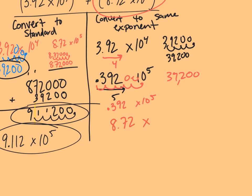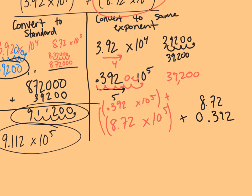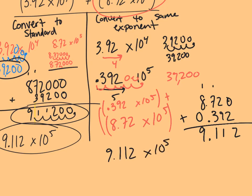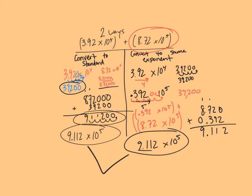So I'm going to write that number again: 8.72 times 10 to the fifth. Since I have my decimal movements happening the same spacing and direction, I can just simply add my two bases together. Lining my decimals: 8.72 plus 0.392. Two plus zero is zero, nine plus two is eleven — carry the one — three plus seven is ten plus one is eleven — carry the one — zero plus eight plus one is nine. Bringing my decimal straight down: 9.112. And remember, that was times 10 to the fifth. I have my number between one and ten, so it's in scientific notation.